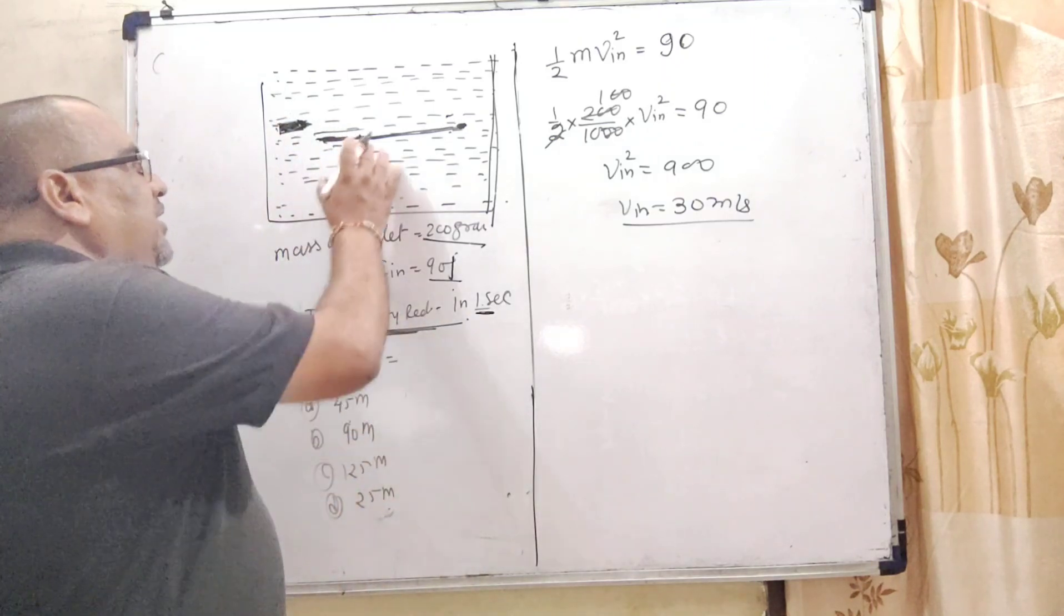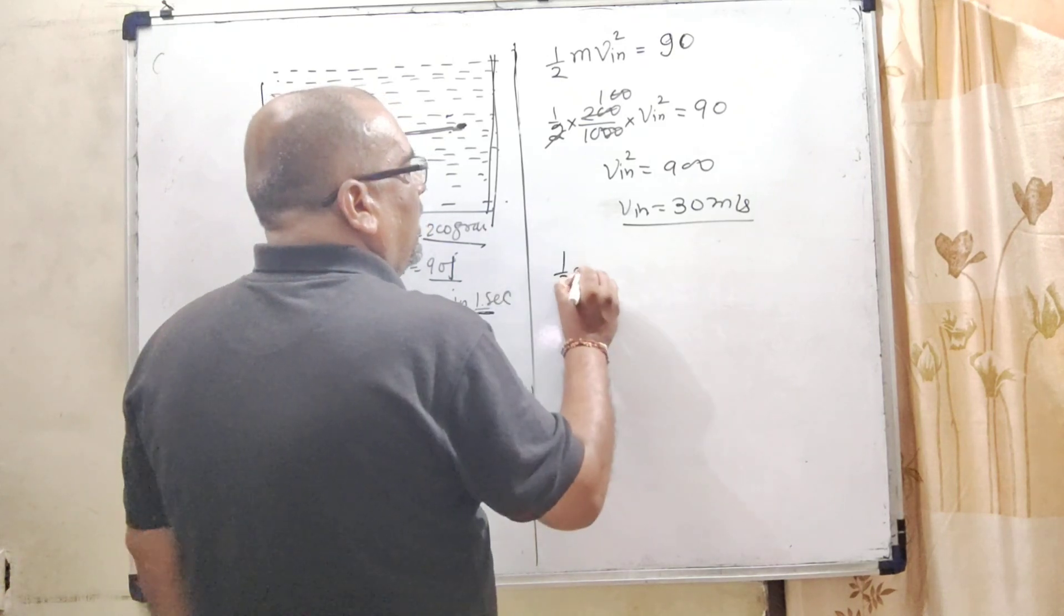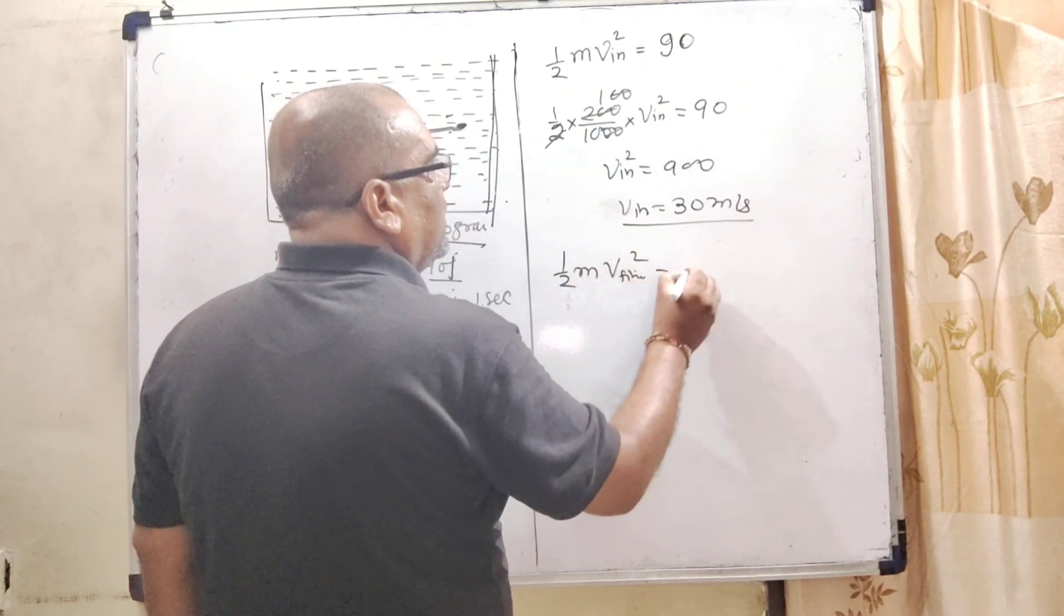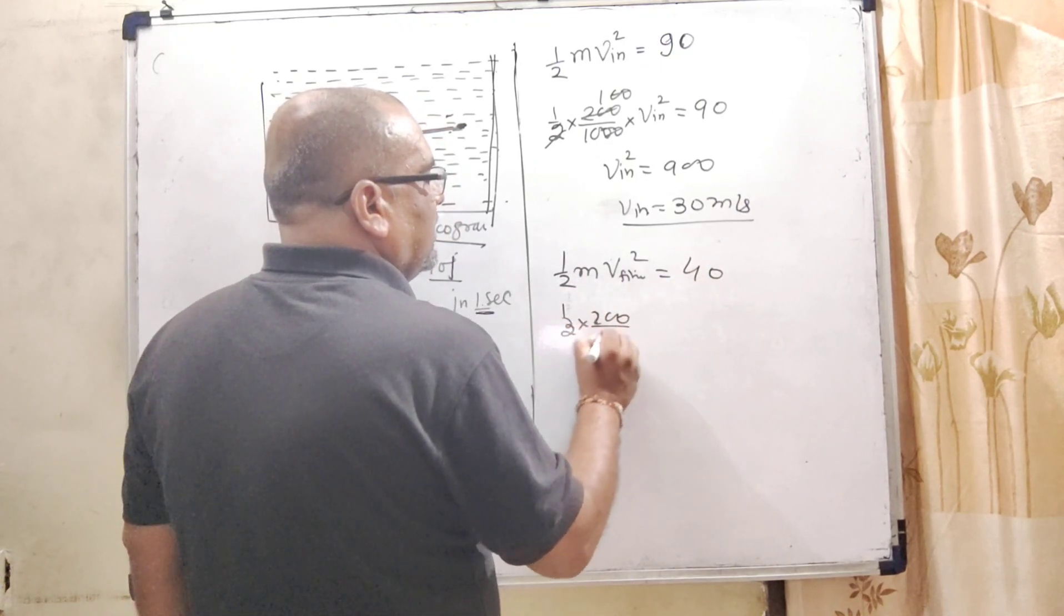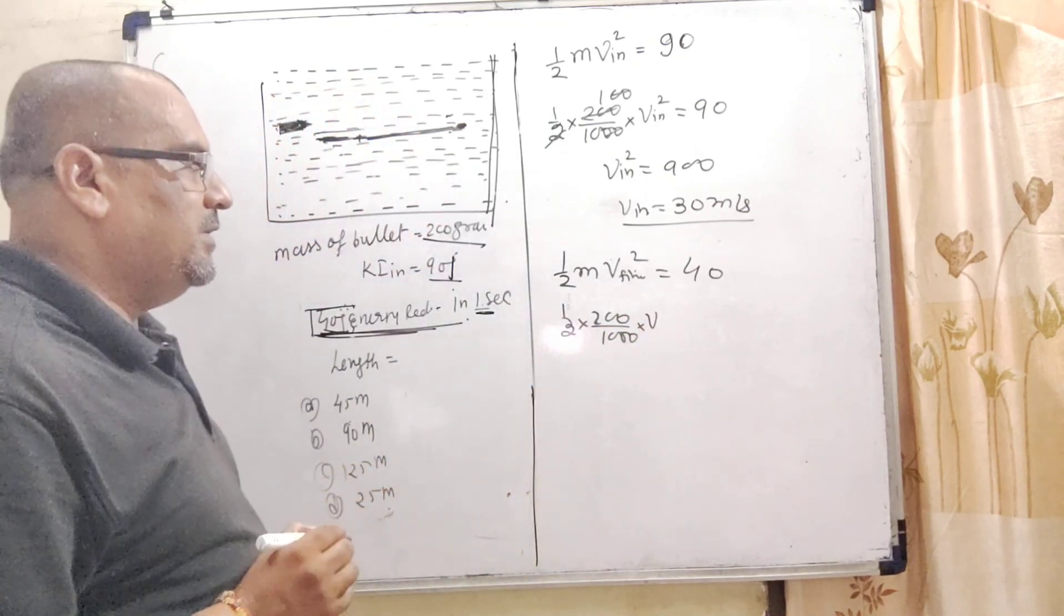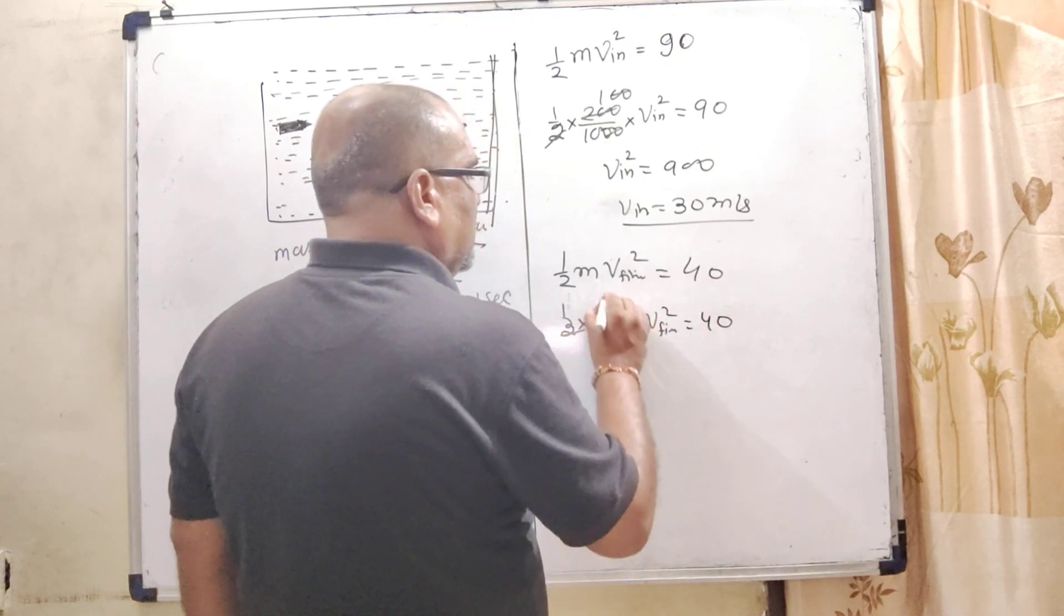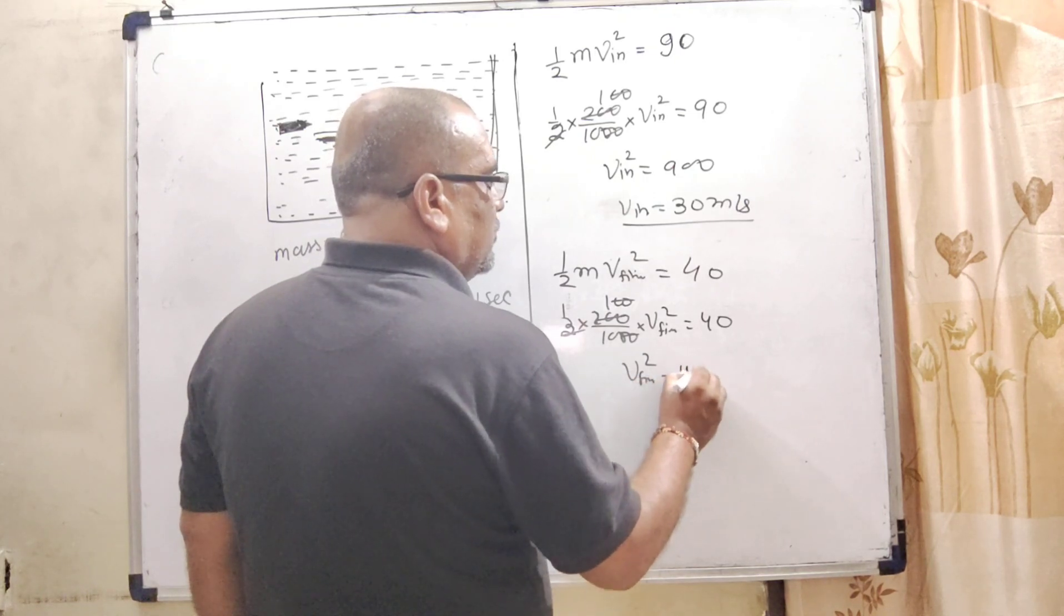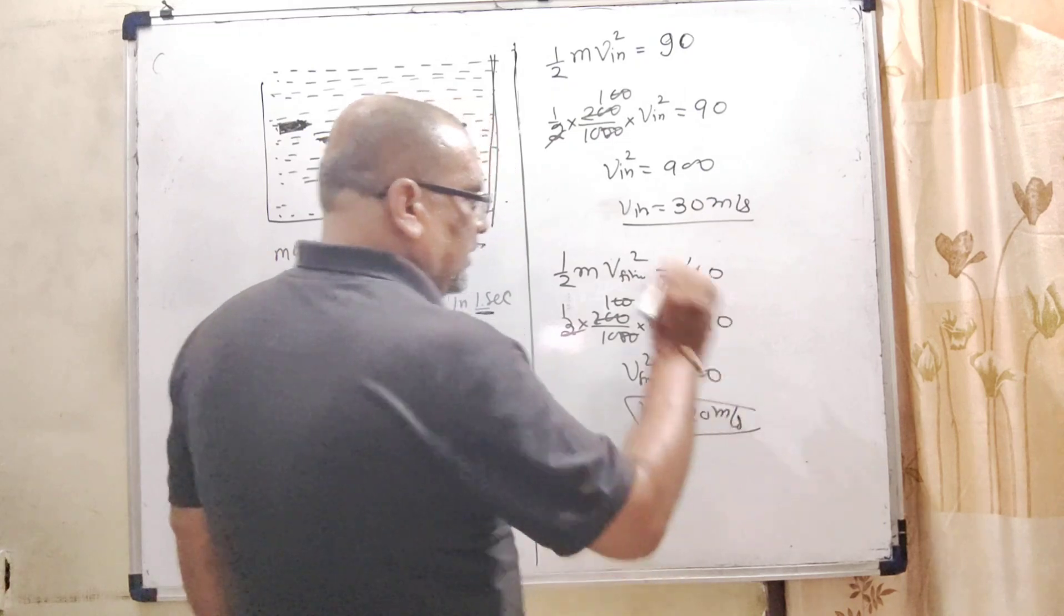Now in 1 second, the energy becomes 40 Joules. In that time, we again use the formula. One-half m times final velocity squared equals 40 Joules. Mass of bullet is the same, 200 by 1000, times the square of final velocity. This gives 400, so the final velocity becomes 20 meters per second.